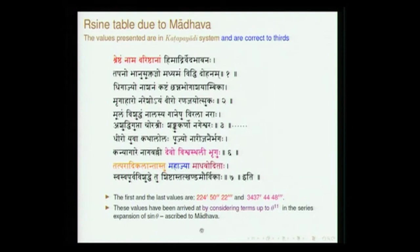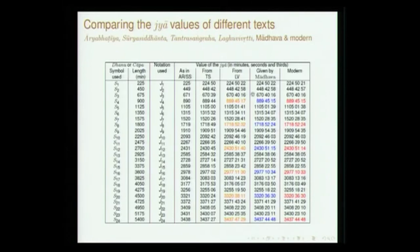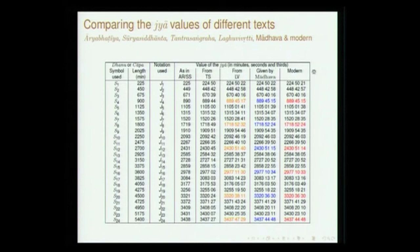A comparison shows that the modern value and the value given by Madhava are almost identical up to thirds: 3437, 44, 48 — they almost coincide. The kind of accuracy achieved has to do with the accurate value they were able to find using the series. This is crucially dependent on the value of R (trijya, the radius). Even without the sine series, Govinda Swami had been able to obtain a table fairly close to Madhava's. If you take R to be 3438 and do your computation, the accuracy is far less than what Madhava achieves with a more precise value of R.